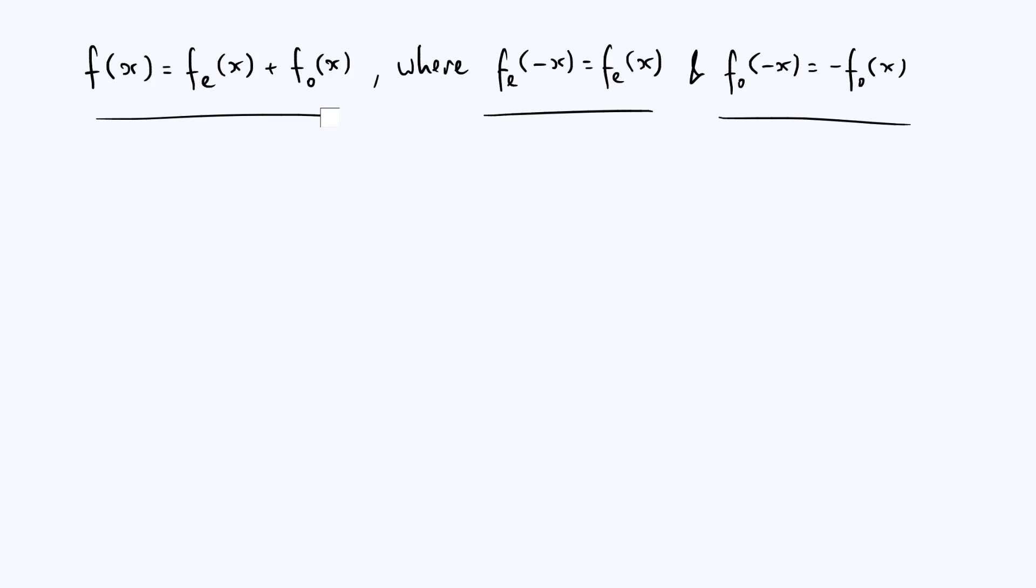So what I mean by that is we take our original equation, let's call that equation one, and we just replace x with minus x. Because you can evaluate your functions at any particular argument, we can evaluate them with an argument of x or an argument of minus x. So let's do it with minus x.